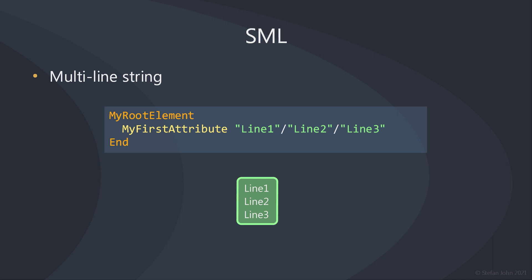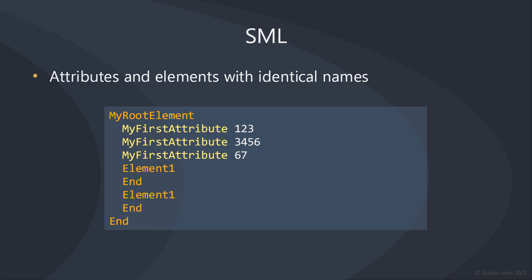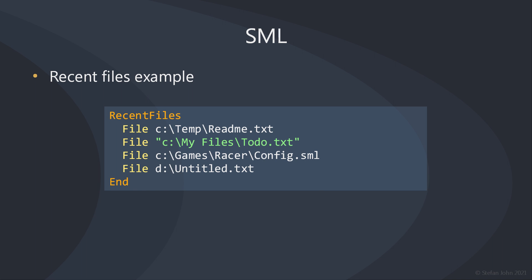SML also handles multi-line strings. If your value contains a line break character, the value is split into its line strings and separated by a slash without any whitespace in between. In the example you can see that the first attribute has a value with three lines. Also, an element's child attributes and elements can have the same name. In this example you can see that there are three attributes all named my first attribute, and two elements both named element1. With that in mind you can create file lists, like this recent files list, with multiple attributes all called file.